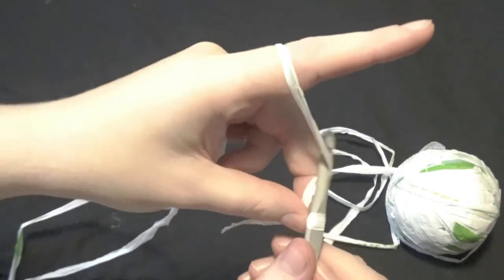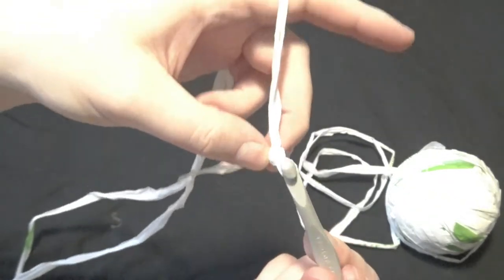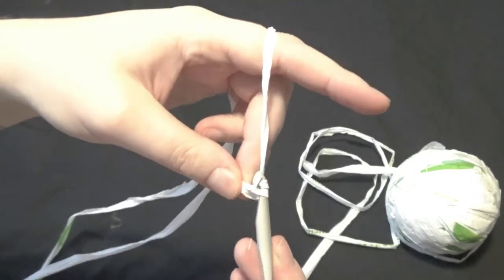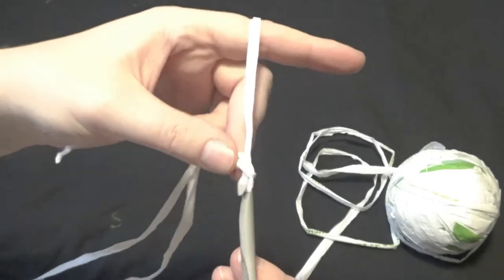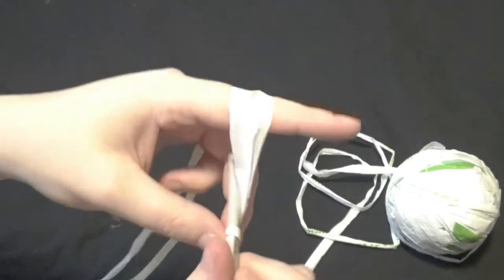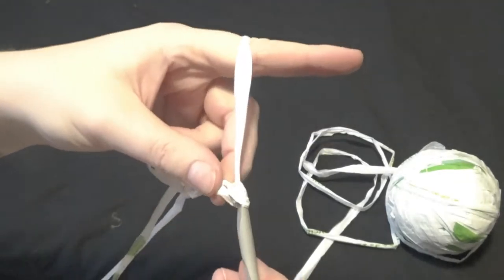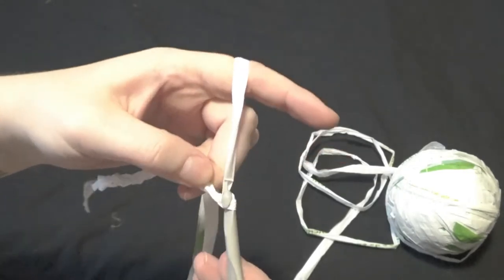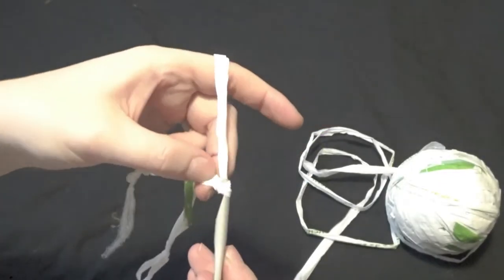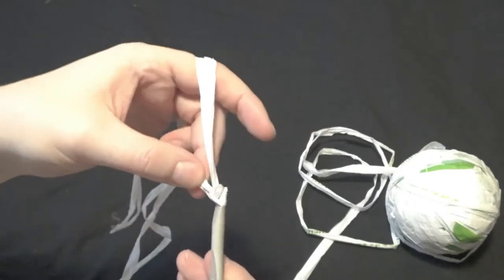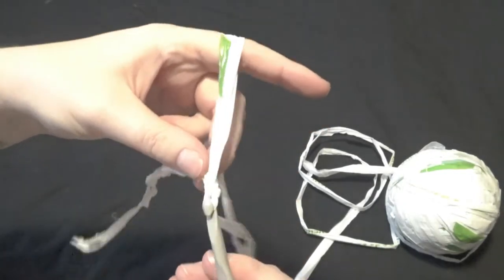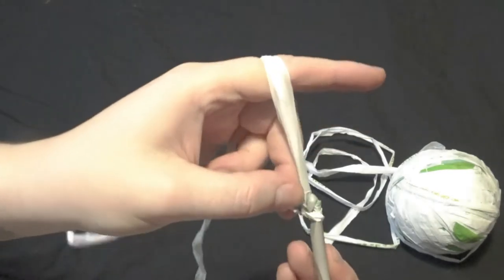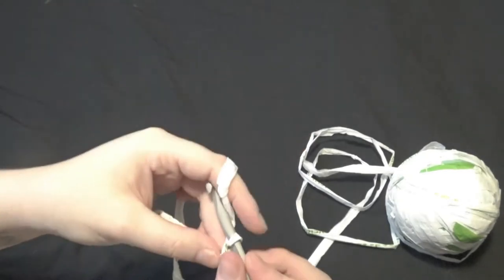So what we do is we take the yarn over our hook like this and just pull it through. So that's one. And we are going to do it again for two and three and four, five, six, seven, eight, nine, ten, eleven, twelve, thirteen, fourteen, fifteen, sixteen, seventeen, eighteen, nineteen, twenty and our twenty-one.